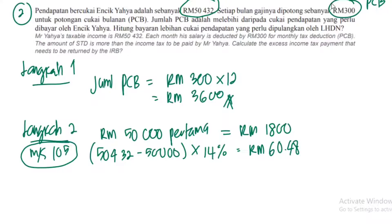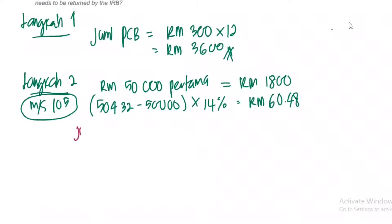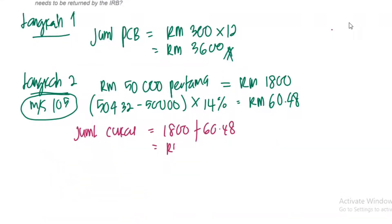Jadi jumlah cukai dia — kita tambah dua ni. Jumlah cukai: 1,800 tambah dengan 60.48, total dia RM1,860.48. Ni jumlah cukai. Bila PCB dia banyak — potong gaji dia sepatutnya banyak ni.